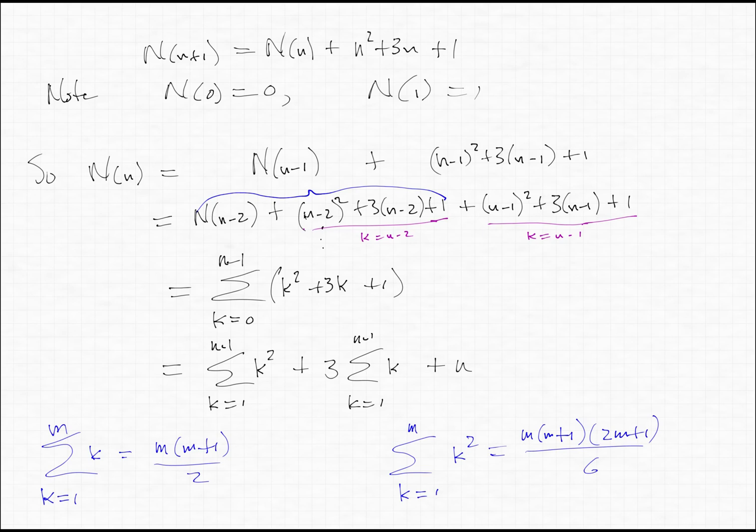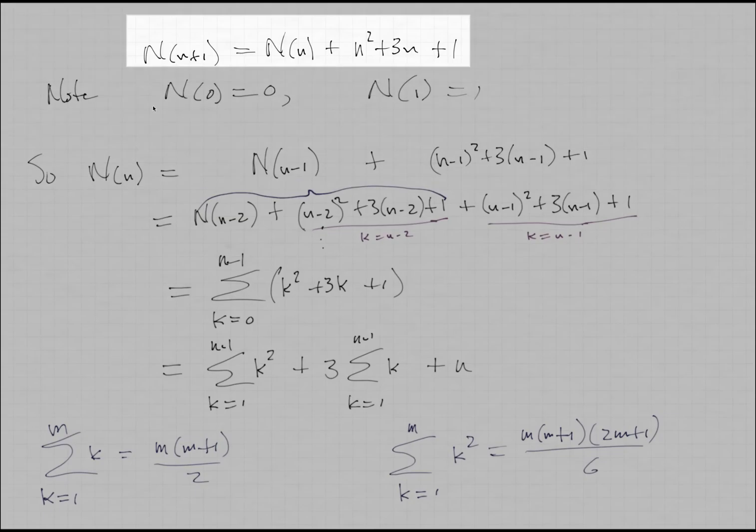Now, okay, so having gotten the inductive formula for capital N of N plus one, I just copied this from the previous page. Now, note that it's easy to get the values for big N of zero. If you're not solving for anything, no variables, then no operations are required. If you're only solving for one variable in one equation, only a single operation is required, namely division. You just divide to get the solution.